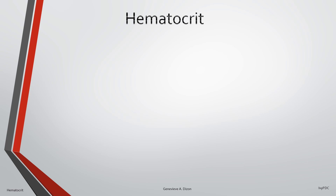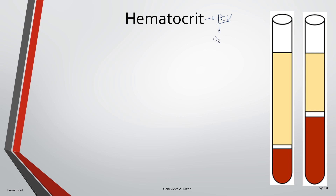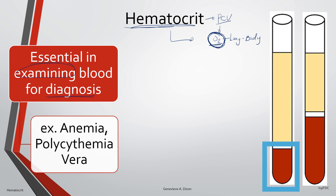Hematocrit is important because red blood cells are responsible for the delivery of oxygen from the lungs to the different parts of the body. A measurement of hematocrit gives a good reference for the body's capability to deliver oxygen, and is essential in blood examination to arrive at a diagnosis. Examples include anemia, where there is low packed cell volume or decreased hematocrit, and polycythemia vera, where too much red blood cells are seen and hematocrit is elevated.